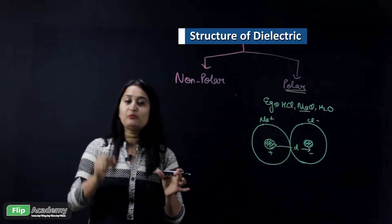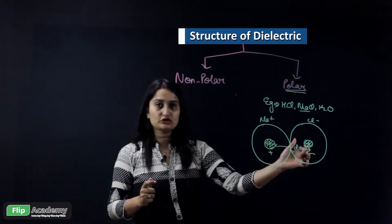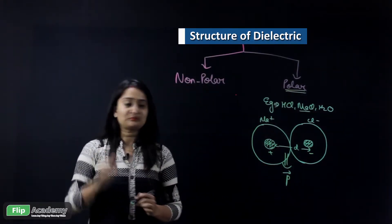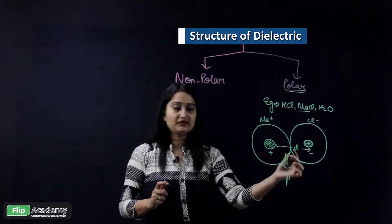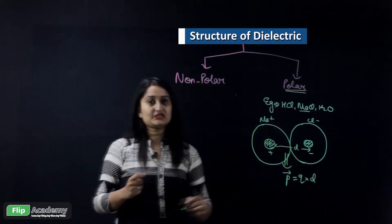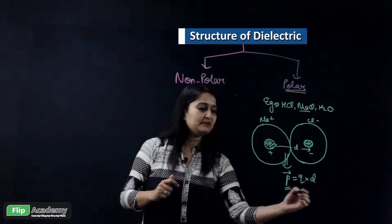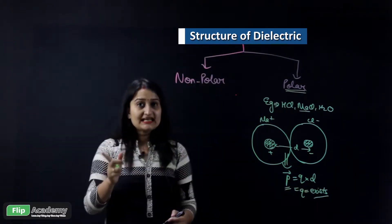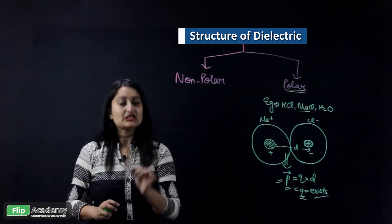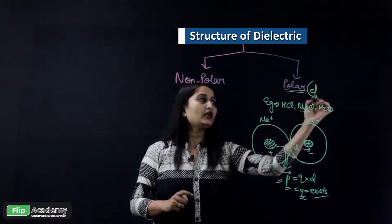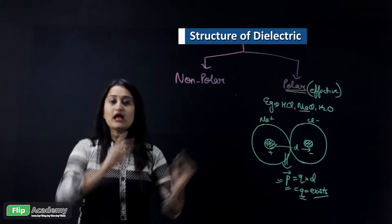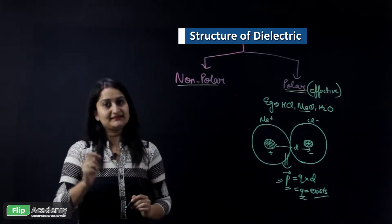In polar dielectrics, an electric dipole is formed and a dipole moment exists because of the separation distance d between positive and negative charges. The formula for dipole moment is p = q × d. Since this value exists and charge also exists, polar dielectrics are very effective dielectric systems.